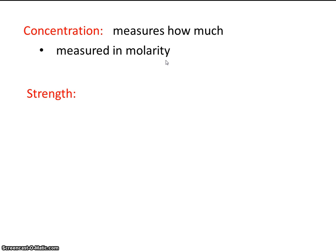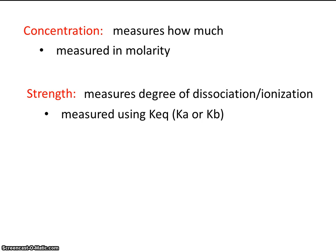Let's contrast that with strength. Strength is the measure or degree to which an acid or base dissociates or ionizes. So how much does that acid or base split up? And those are measured using equilibrium constants, KEQ. Or specifically, if we're talking about an acid or a base, we call it Ka or Kb.